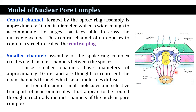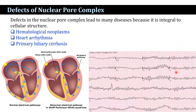If defects occur in the nuclear pore complexes, many diseases can result, such as hematological neoplasms, cardiac arrhythmia, and primary biliary cirrhosis.